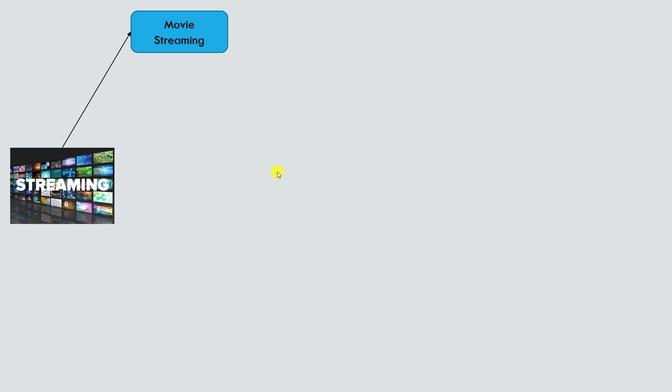Logically we want to understand if movie streaming is working fine or not. That could be one service. Another service could be movie onboarding — monitoring whether the onboarding process is going smoothly or not. When we talk about Netflix as an example, their architecture is really complex.